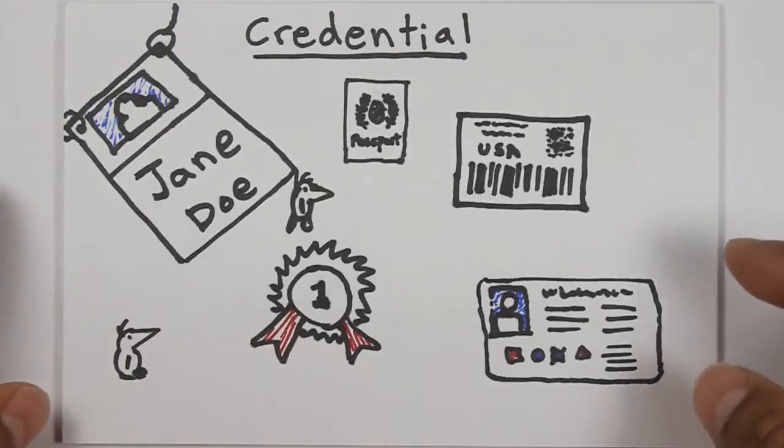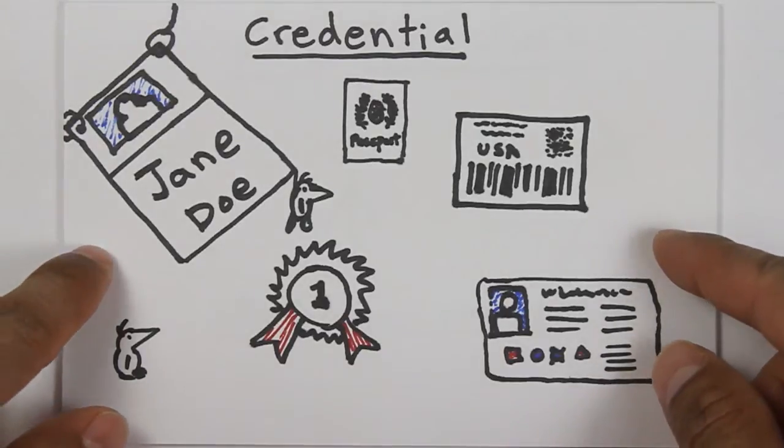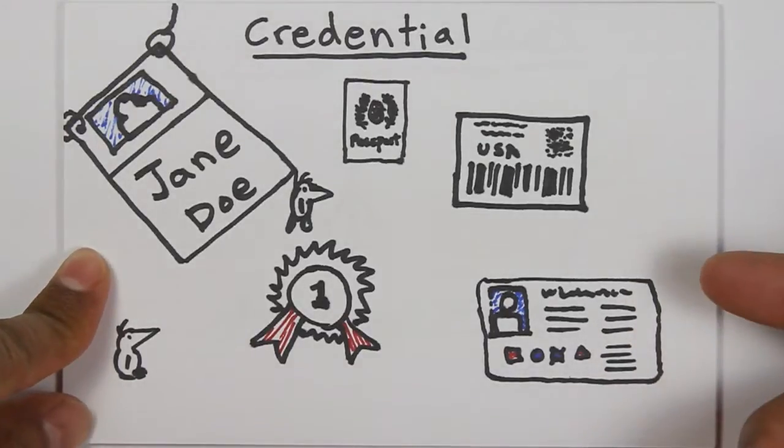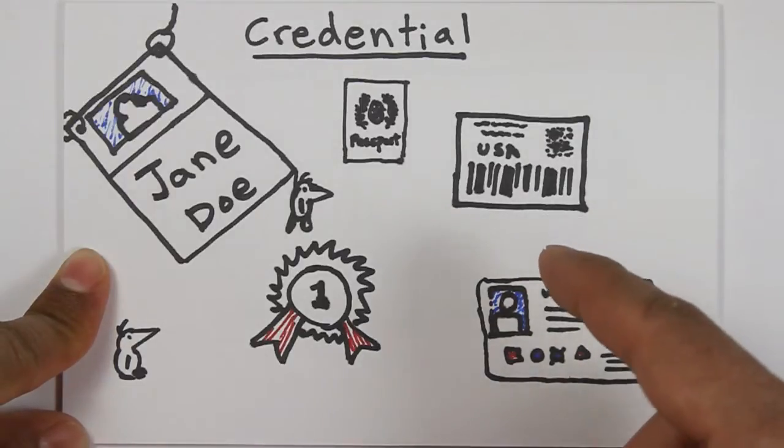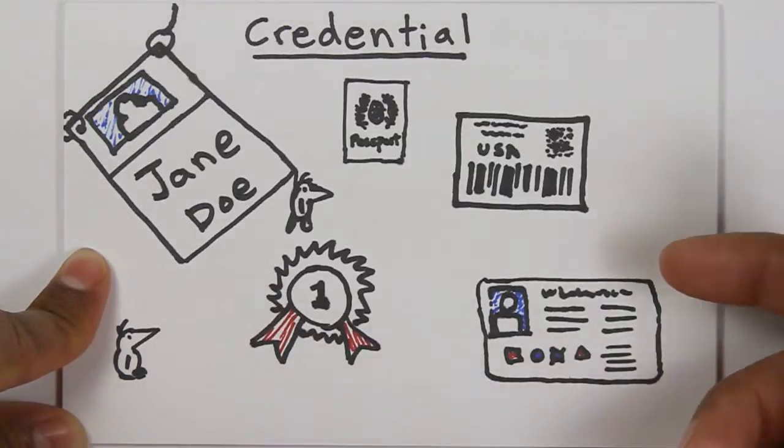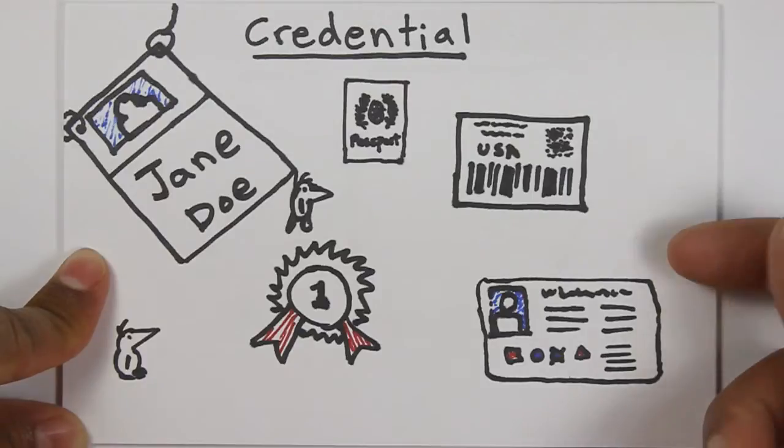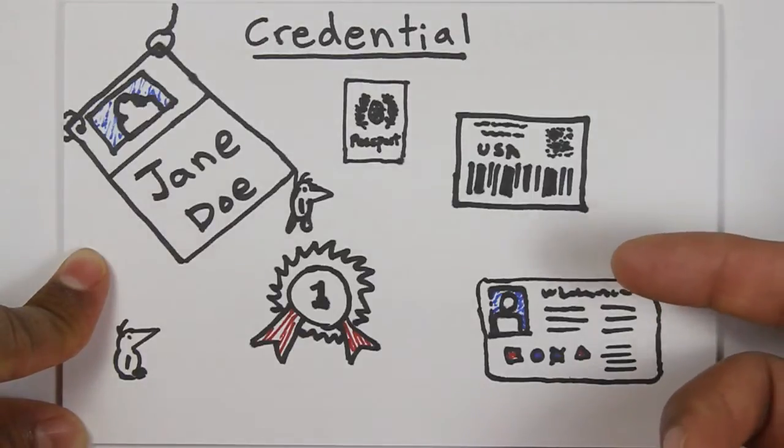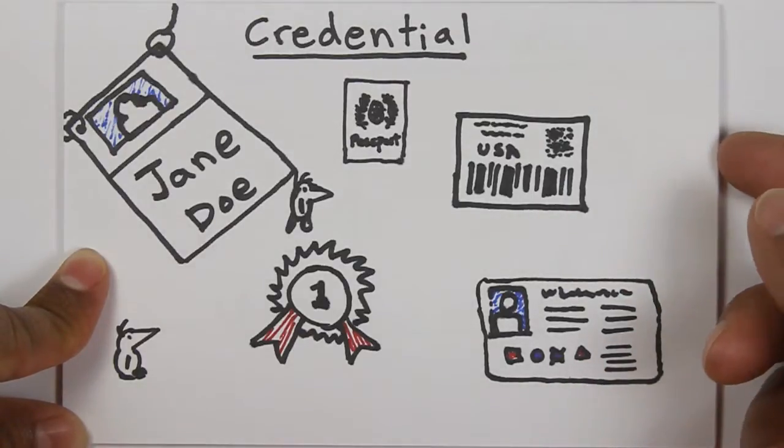Before we get into the main meat of this discussion, let's talk about what a credential is. A credential is basically a qualification or achievement, a quality or piece of information about your background, such as a name or government ID, a payment provider, a home address, or a university degree. A credential is basically a set of information that's associated with you.